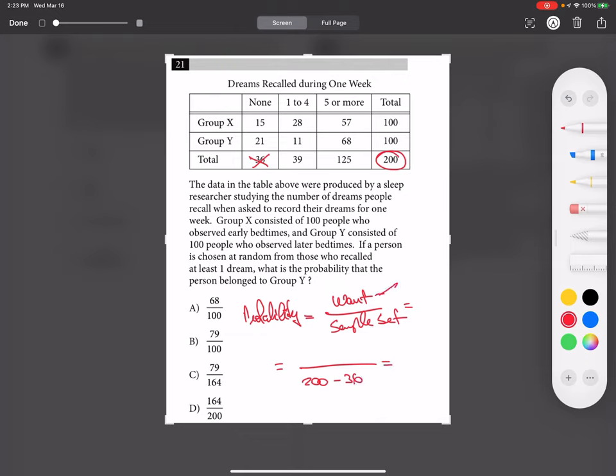And what is the group that he wants? Group Y that had at least one dream. So it's 68 plus 11. This is 79 over 164.